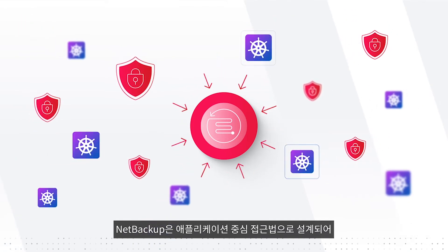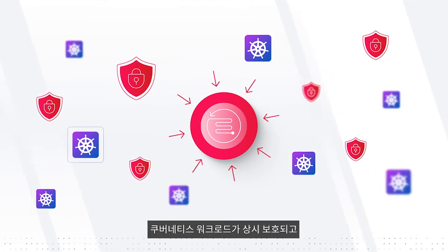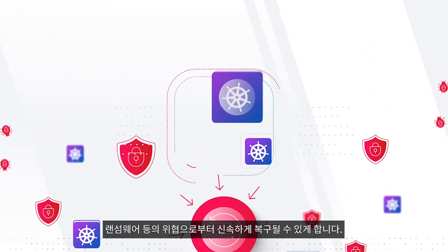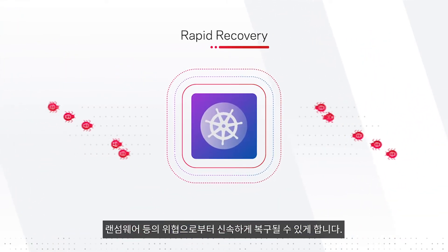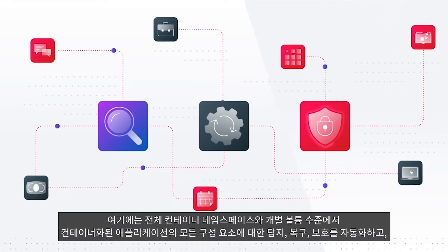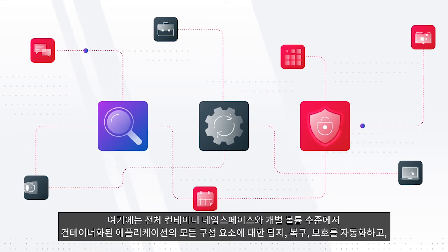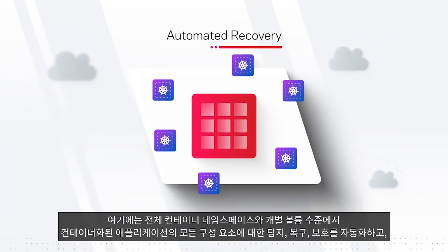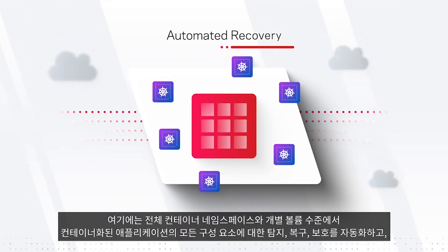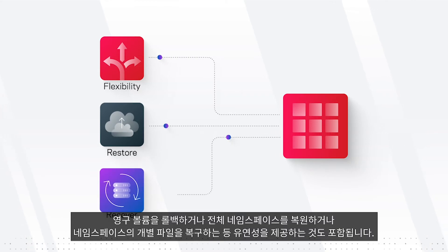Designed with an application-centric approach, NetBackup ensures that Kubernetes workloads are always protected and quickly recoverable against threats like ransomware. This includes automating the discovery, recovery, and protection of all components of containerized applications at the entire container namespace and individual volumes level, as well as providing the flexibility to roll back persistent volumes, restore the entire namespace, or recover individual files within the namespace.